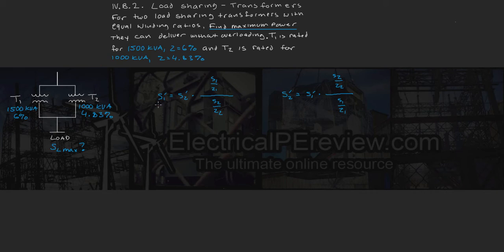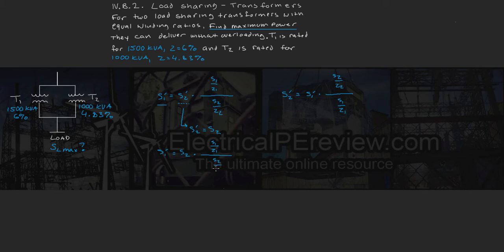Now we want to find transformer 1's contribution when transformer 2 is at full load — that means when S2' equals its rating. Plugging that in, S1' equals S2 times (S1/Z1) divided by (S2/Z2). The S2 terms cancel, leaving us with S1' equal to the rating of transformer 1 times the ratio Z2 over Z1.